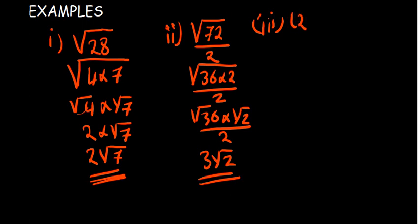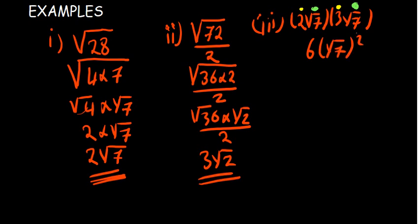The third example: simplify 2√7 multiplied by 3√7. Multiply the rational parts together: 2 × 3 = 6. Multiply the surd parts: √7 × √7 = 7. So the result is 6 × 7 = 42. Our final answer is 42.